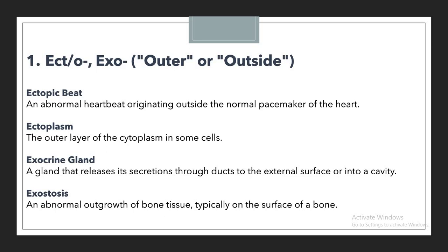Here I have noted down a couple of examples for ECTO. The first example is ectopic beat, which means an abnormal heartbeat originating outside the normal pacemaker of the heart. The term ECTO is used to showcase something as outside. The second example is ectoplasm, which means the outer layer of the cytoplasm in some cells — again using ECTO as a prefix.